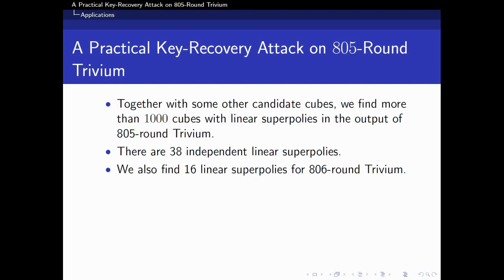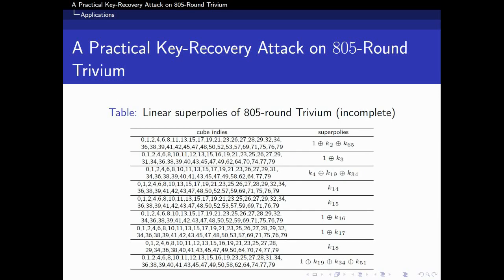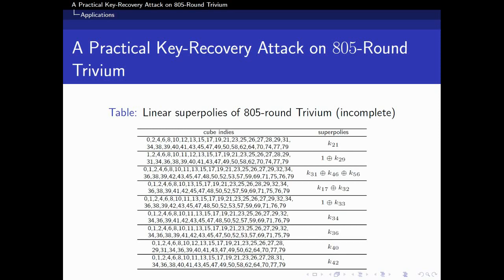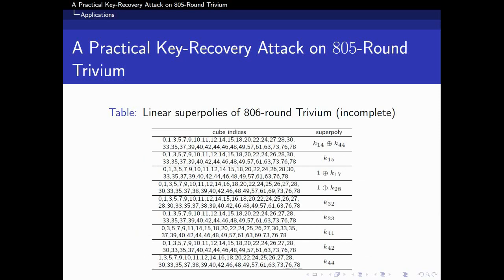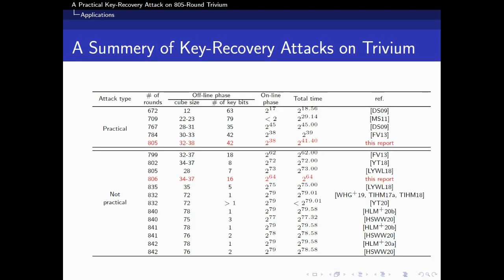Together with some other candidate cubes, we find more than 1000 cubes with linear superpoly in the output of 805-round Trivium. There are 38 independent linear superpolys. These are a part of linear superpolys of 805-round Trivium. We summarized the key recovery attacks on Trivium. Note that the previous best practical attack is on 784-round Trivium proposed by Fouque and Vannet. In this work, the best practical key recovery attacks are improved 21 rounds to 805-round Trivium.